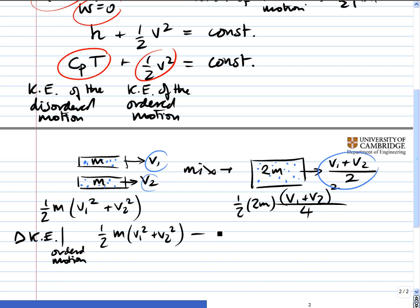Now, you can do this sum, and you'll find that that's equal to a quarter m v₁ minus v₂ squared. Now, because of the squared term here, it's always positive. You'll notice that, a little check, when delta v is equal to 0, there's no loss in kinetic energy of ordered motion.